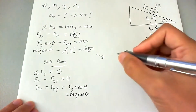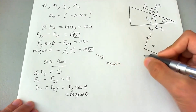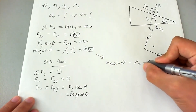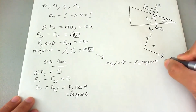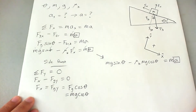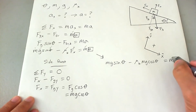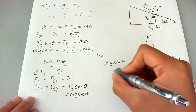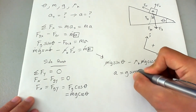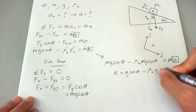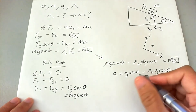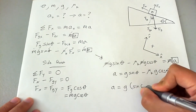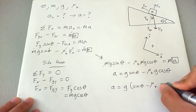Side quest over. Bringing everything together: we have MG sine theta minus mu-K times MG cosine theta, and that equals M times A. Luckily, we can cancel out all the M's — so mass does not matter. With A isolated, the algebra becomes easy: A equals G sine theta minus mu-K times G cosine theta, which simplifies to A equals G times (sine theta minus mu-K cosine theta).